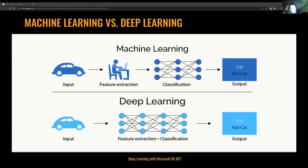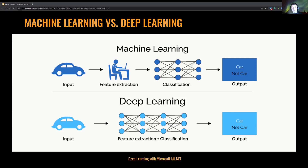Machine learning uses algorithms to process data, learn from data, and make informed decisions based on what it has learned. On the other side, deep learning structures algorithms in layers to create an artificial neural network that can learn and make intelligent decisions on its own. Deep learning is a subfield of machine learning. ML.NET is used for machine learning, but it's not limited to this — I will reveal what we can do with deep learning.